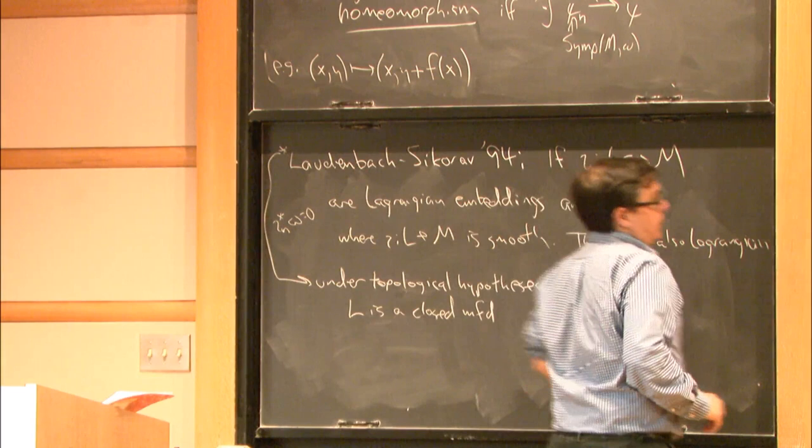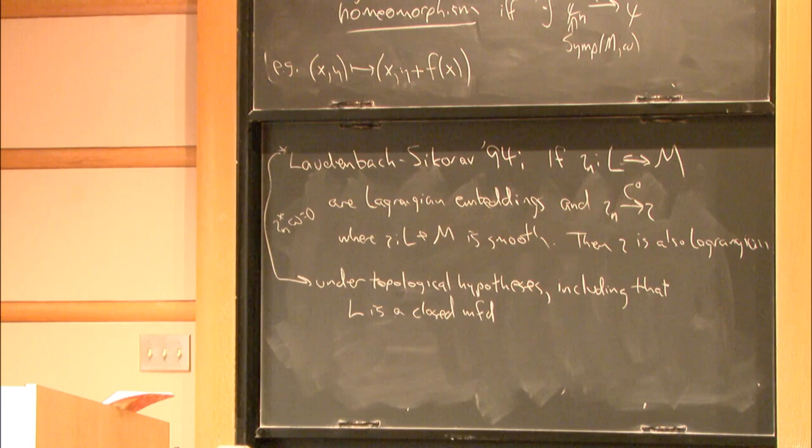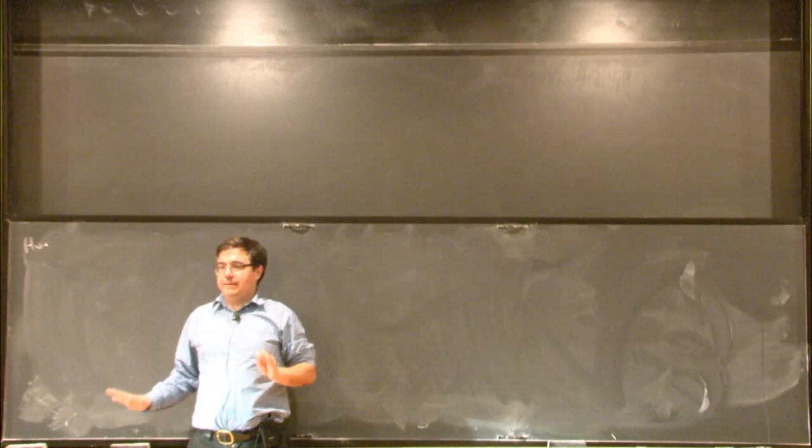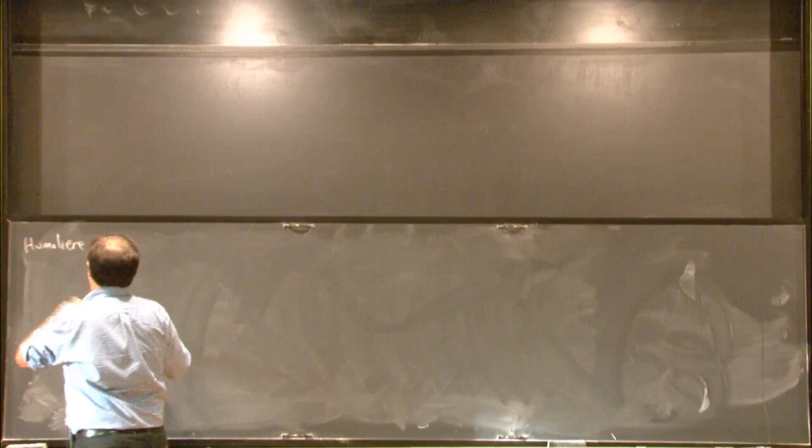This is not a local statement; it requires some amount of global structure to make their argument go. There are topological hypotheses beyond these. The easiest case is if pi 2 of M comma L is 0, and then it also works if M is Euclidean space, regardless of pi 2 of M comma L. But again, this is a global statement. [Question: If the limit is a smooth embedding, do you still need those global assumptions?] Yes. As far as we know, yes. I don't think I know a counterexample, but the proof definitely needs that.